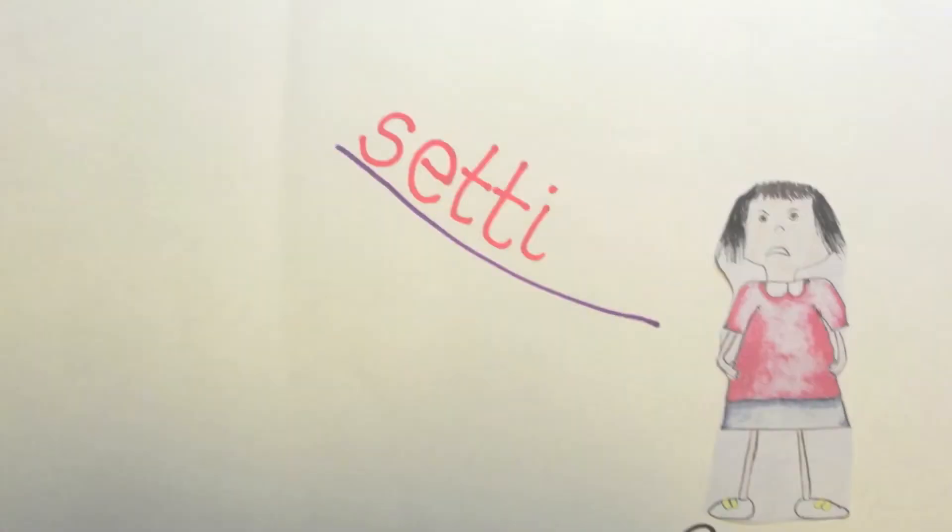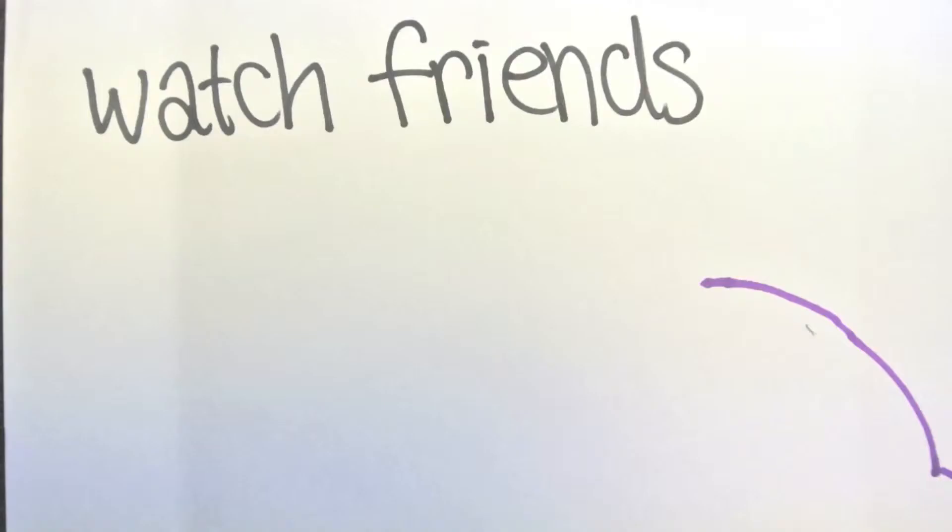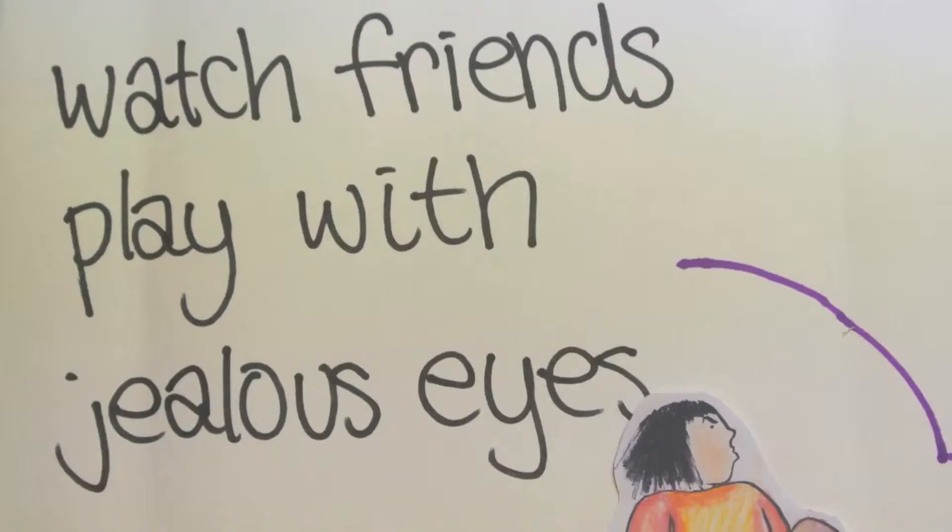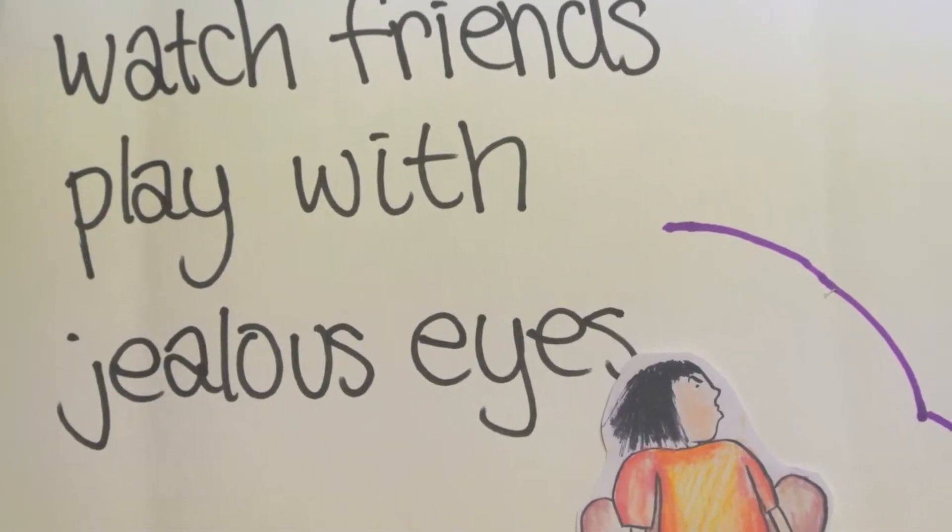Our second branch is called setting. At school, Connie watches friends play with jealous eyes and this makes her extremely unhappy.